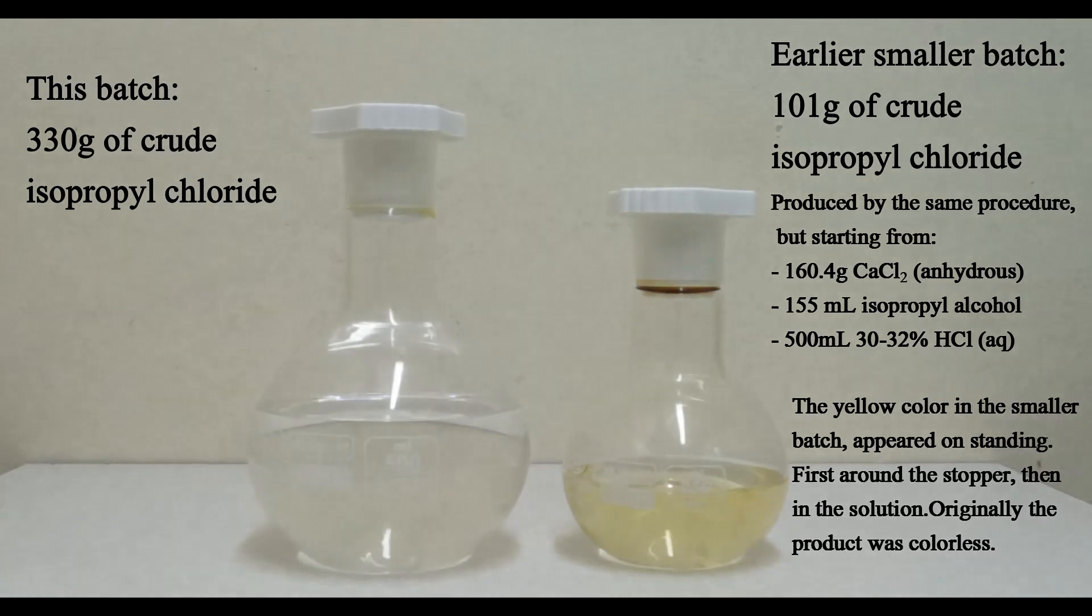On the left in a 500 milliliter one-necked flask is 330 grams of our crude product. On the right in a 250 milliliter one-necked flask is 101 grams of crude isopropyl chloride produced in an earlier run. I decided to combine both products and work them up together.